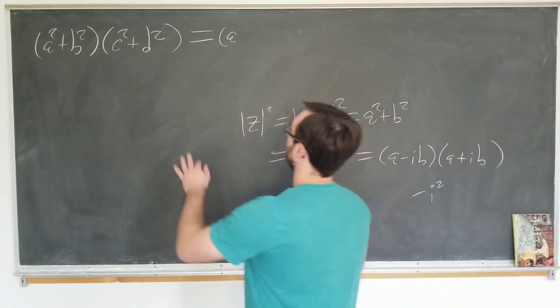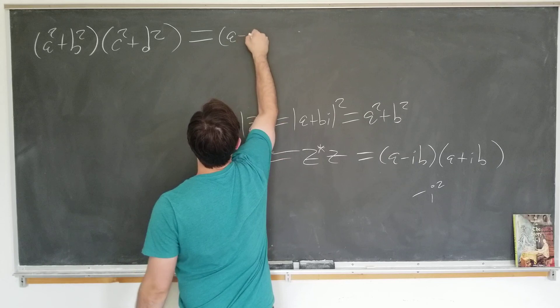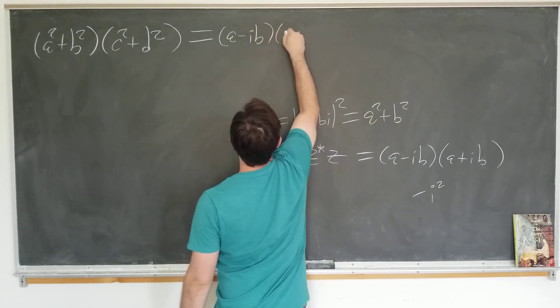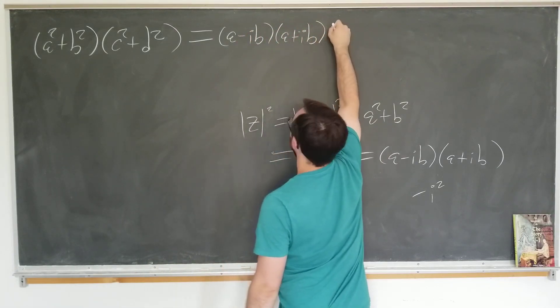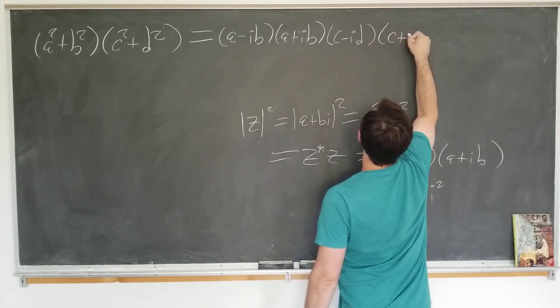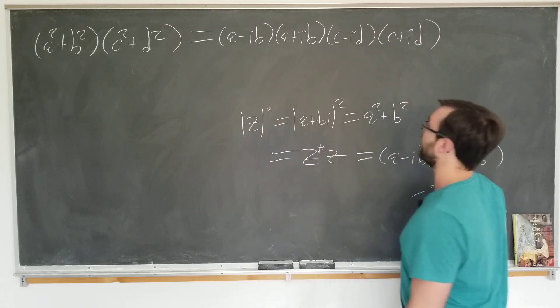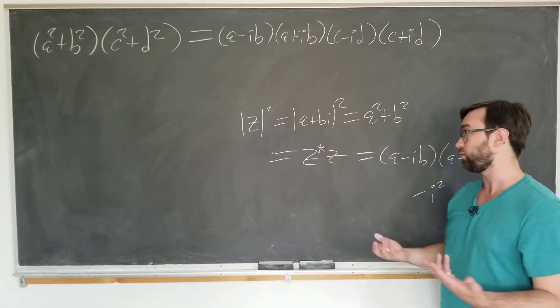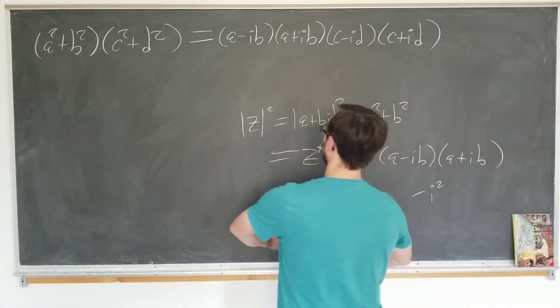So now we're going to write this as a minus ib, a plus ib. Now we're going to have c minus id, c plus id. Now you see immediately that we have more structure to work with than we did before.